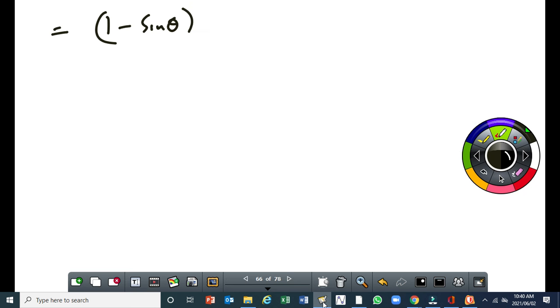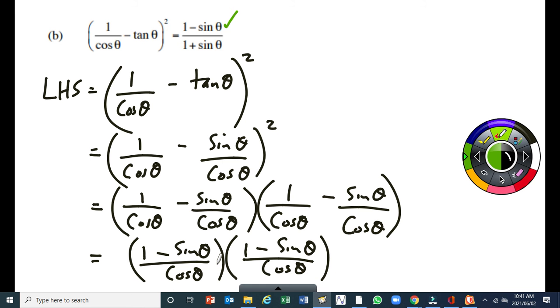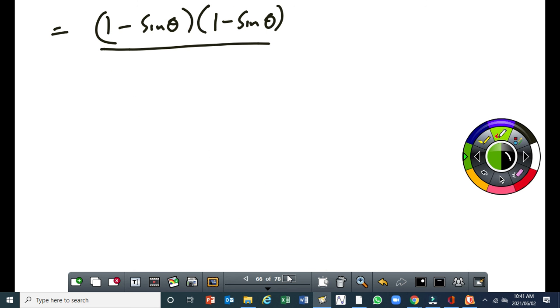I can write my numerator as 1 minus sin θ over cos θ times 1 minus sin θ. There's no need to simplify this yet because my right hand side has got, I'm sure you can see that the right hand side here has got 1 minus sin θ. So, it's not a good idea to rush to remove the brackets there. Then, if I multiply this cos θ and that cos θ, I will get cos squared θ.